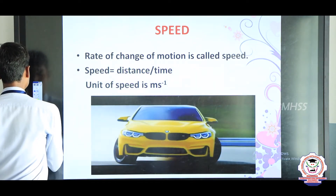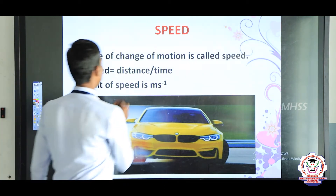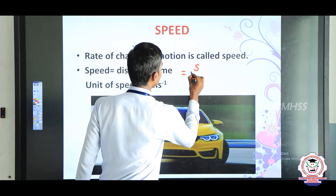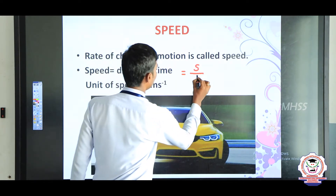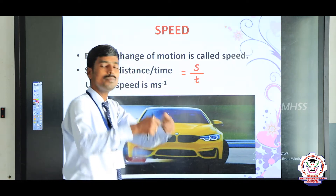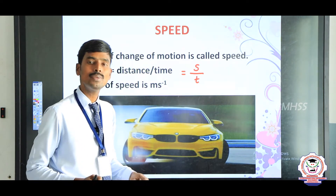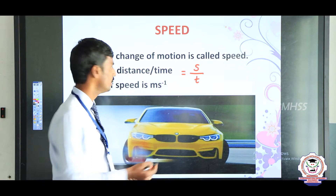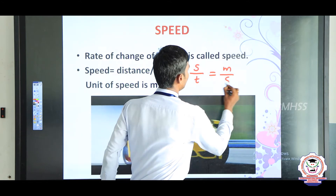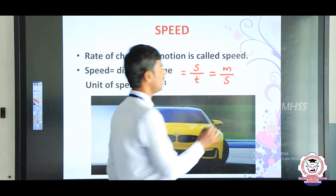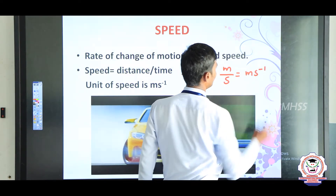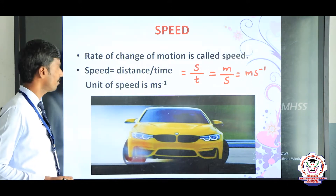For example, speed equals distance divided by time. Here, speed equals distance S divided by time T, where S represents distance and T represents time. The SI unit of speed is meter per second, which we write as m s⁻¹. This is the SI unit of speed.